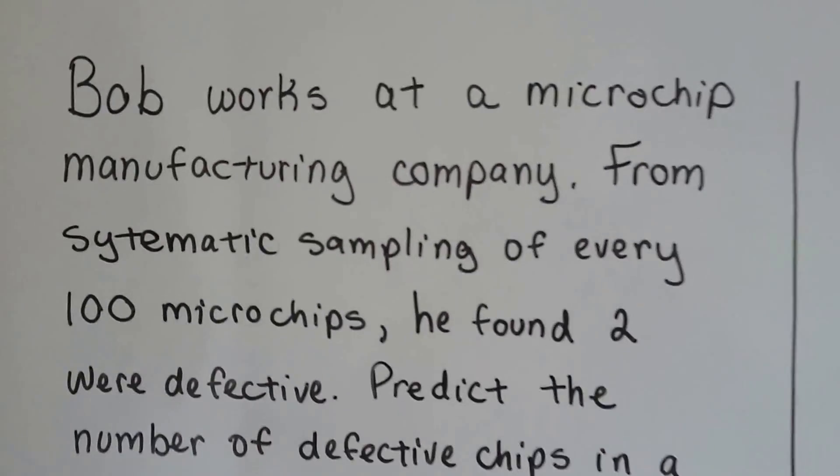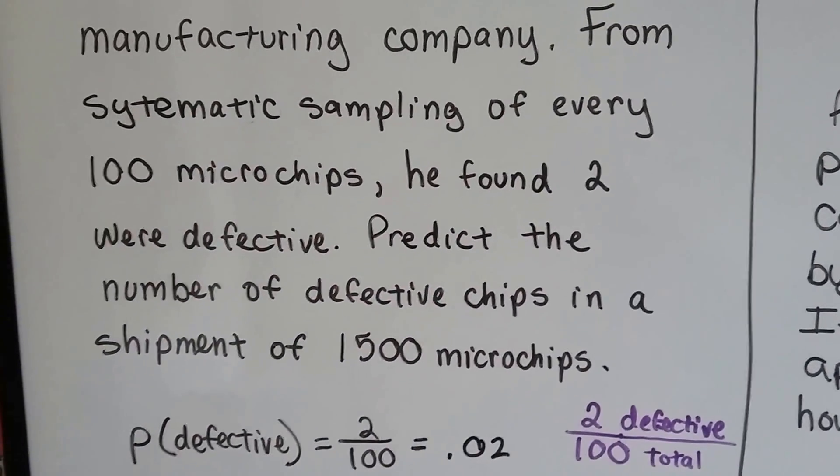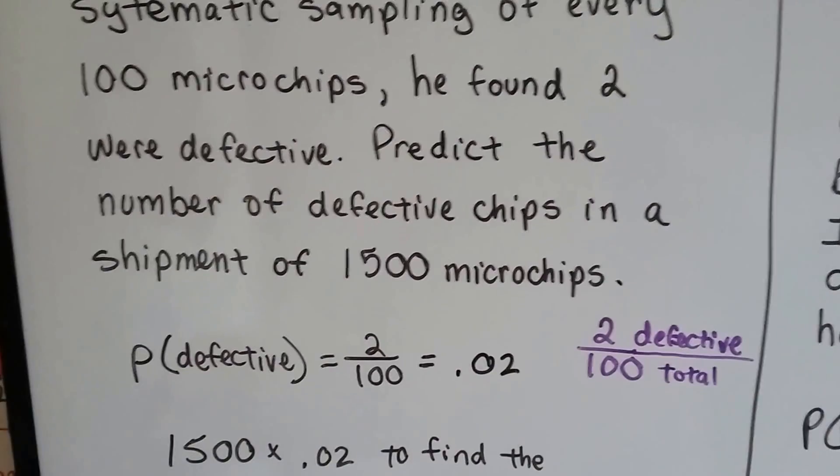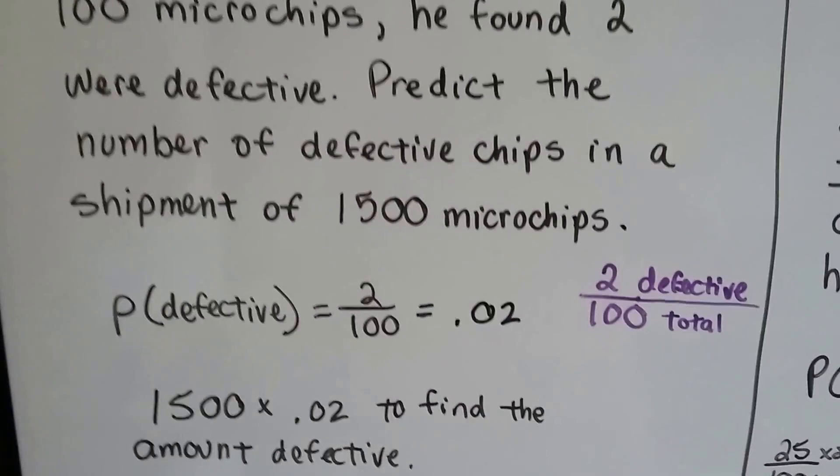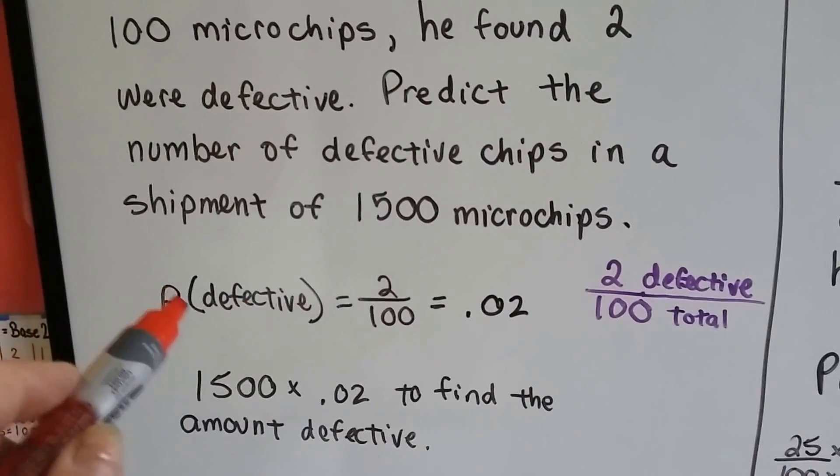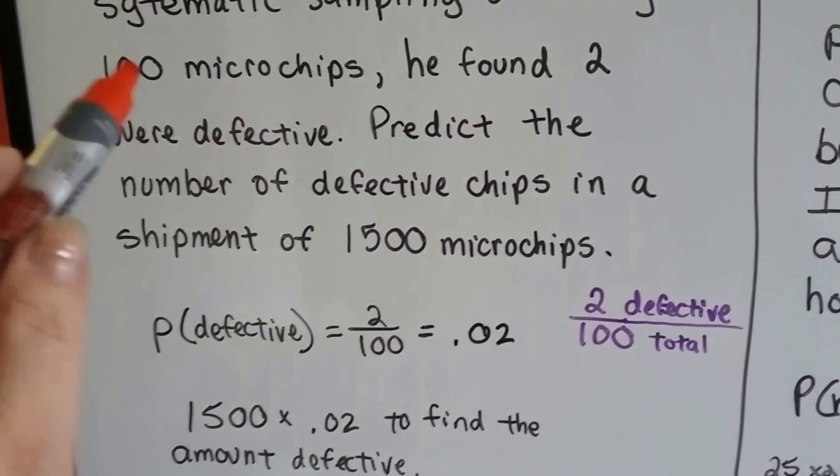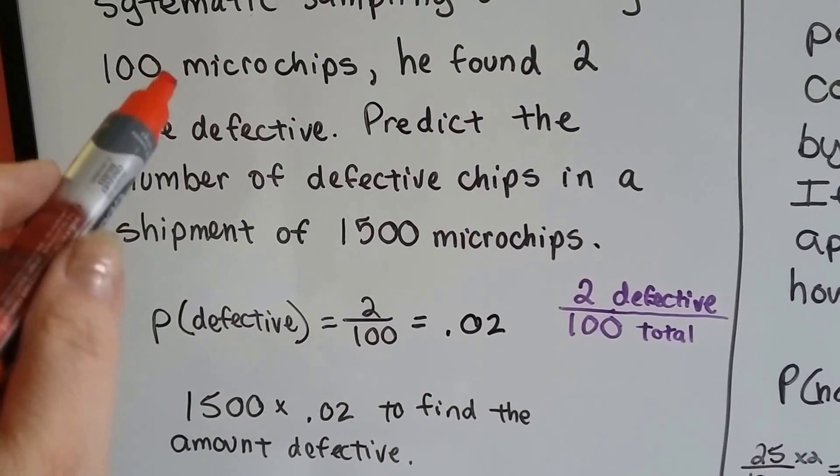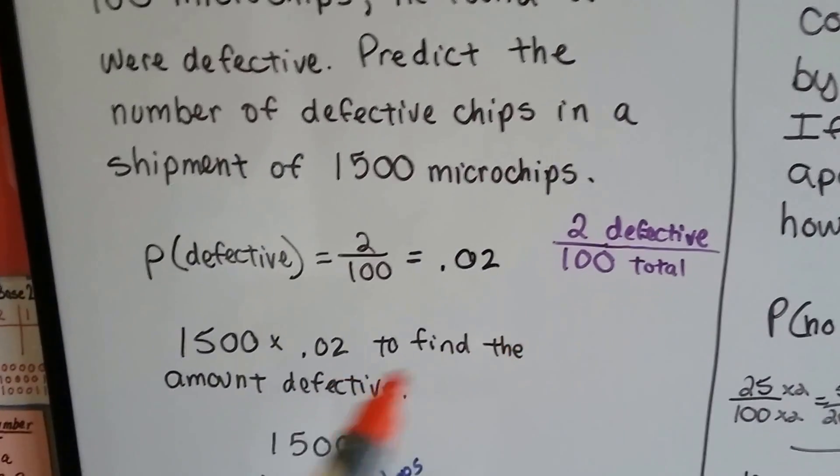Bob works at a microchip manufacturing company, and from systematic sampling of every 100 microchips, he found two were defective. Predict the number of defective chips in a shipment of 1,500 microchips. What we're looking for is defective, so the probability of defective is 2 out of 100. He found 2 of 100, so that's .02. Two were defective out of 100 total.